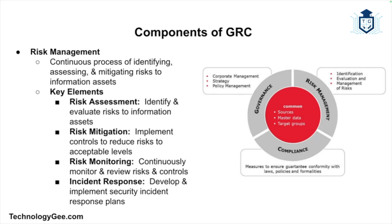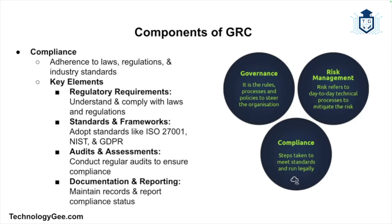The next major component is risk management, which involves identifying, assessing, and mitigating risks to the organization's information assets. It is a continuous process that helps organizations understand their risk landscape and implement controls to reduce the impact of potential threats. Key elements include risk assessment, risk mitigation, risk monitoring, and incident response — developing and implementing plans to respond to security incidents.